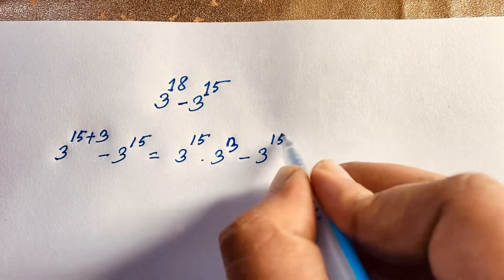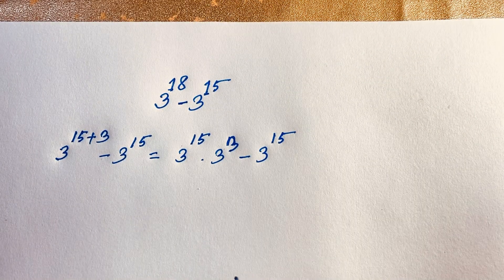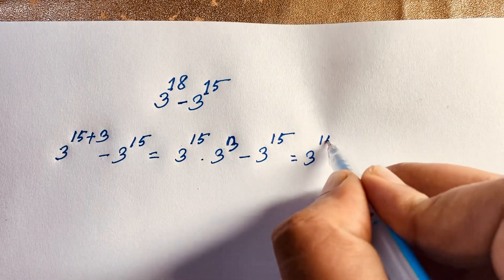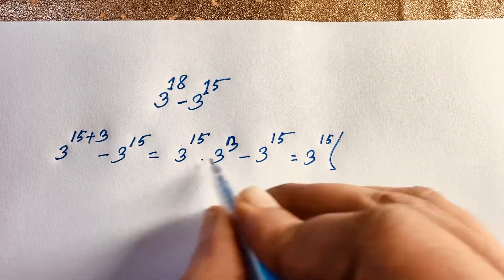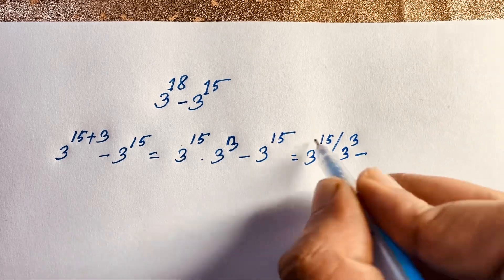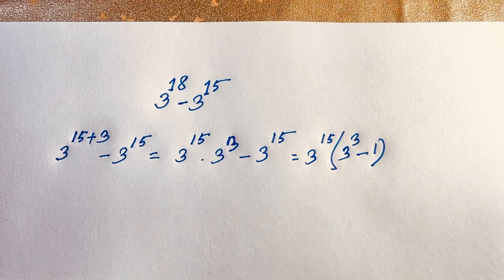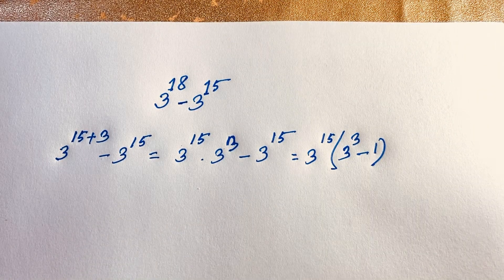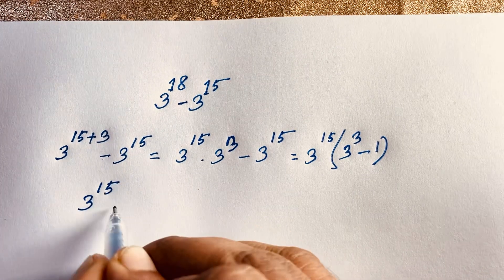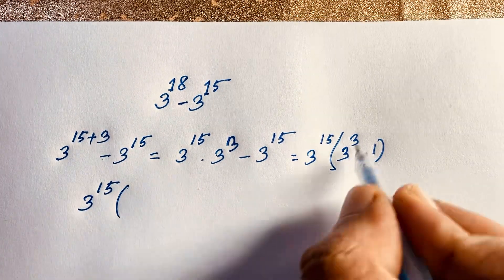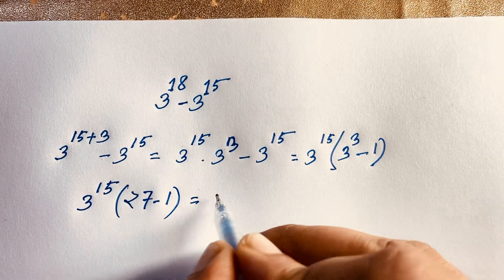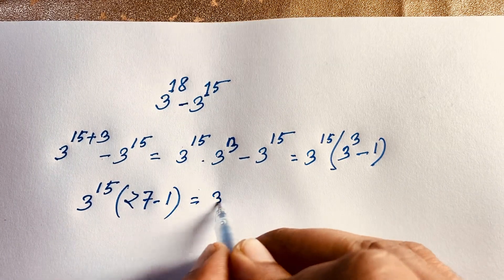In this expression, 3 to the power 15 is common, so factoring it out: dividing gives 3 to the power 3, and dividing the second term gives 1. So we have 3 to the power 15 times (3 to the power 3 minus 1), which is 3 to the power 15 times (27 minus 1).